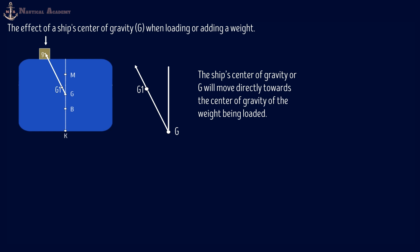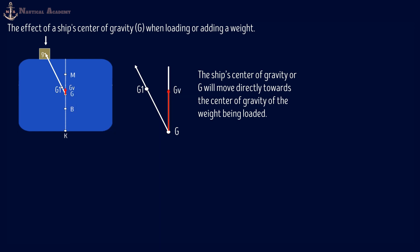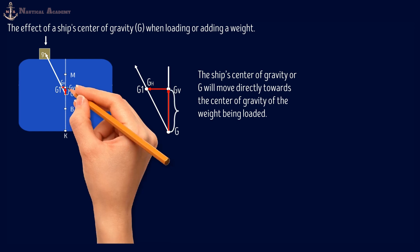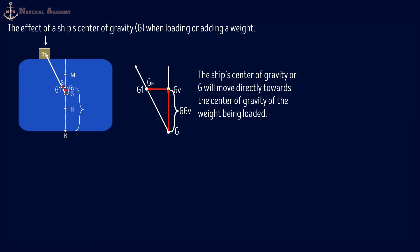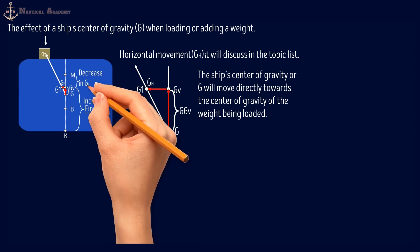If you observe in this example, there are two movements of G: the vertical shift from G to Gv, and the horizontal shift from G to Gh. In this particular scenario, we will only consider the vertical shift GGv since our concern is only KG. The horizontal movement of G will be discussed in another video on the topic of list or ship's listing. So in this case, the effect will be an increase in KG and a decrease in initial metacentric height GM.